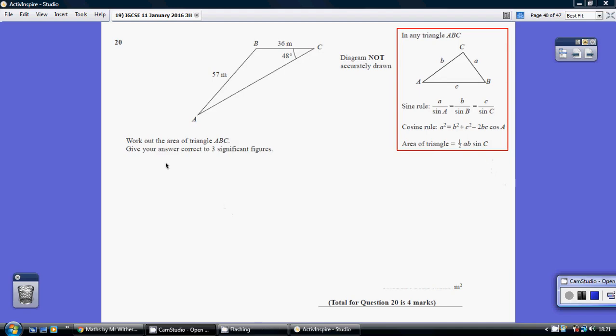Question 20. We've been asked to work out the area of this non-right-angled triangle. We're going to need to use the formula half AB sin C.